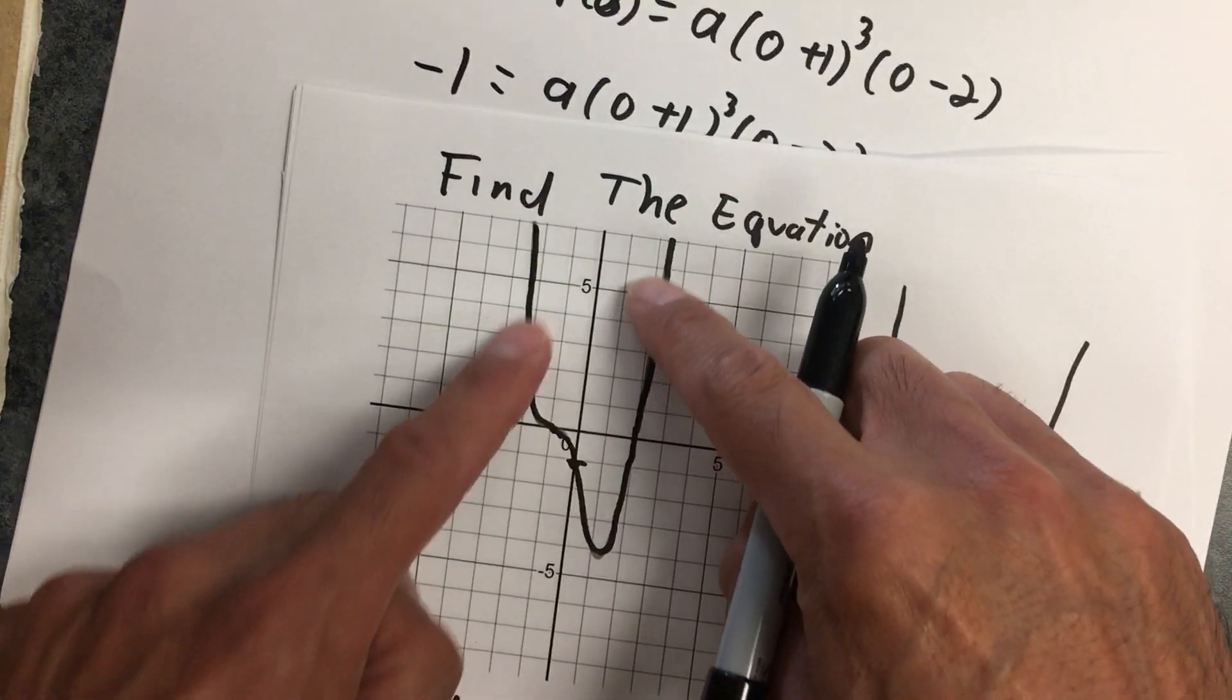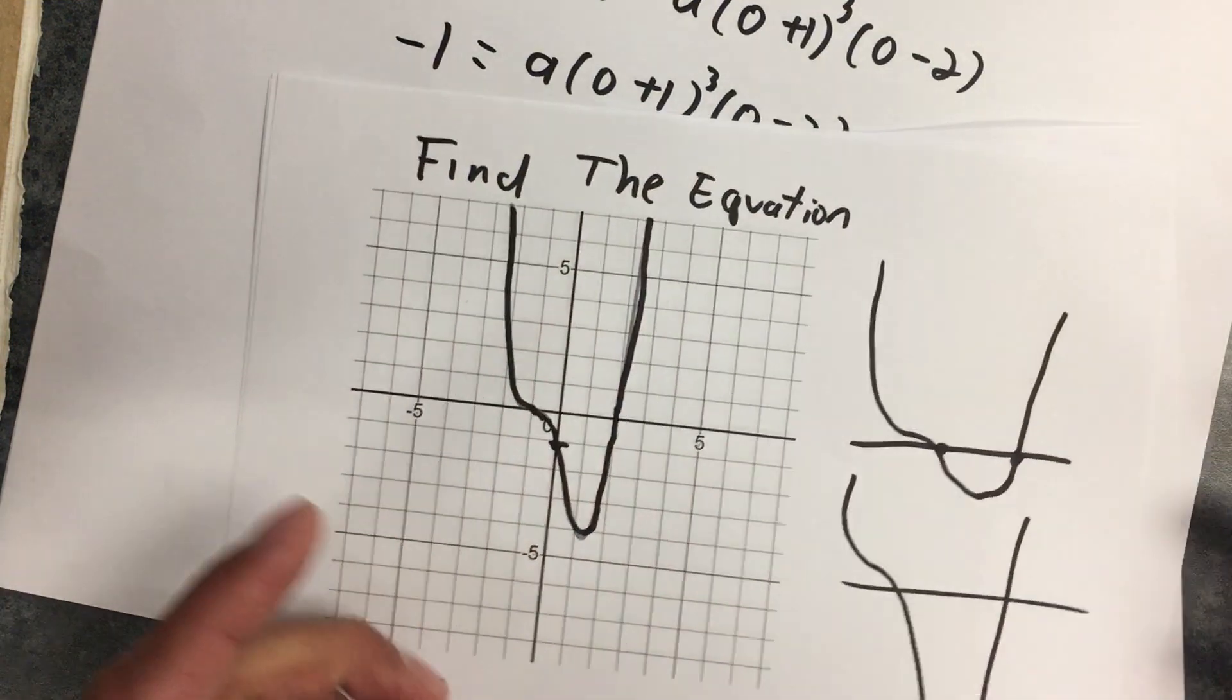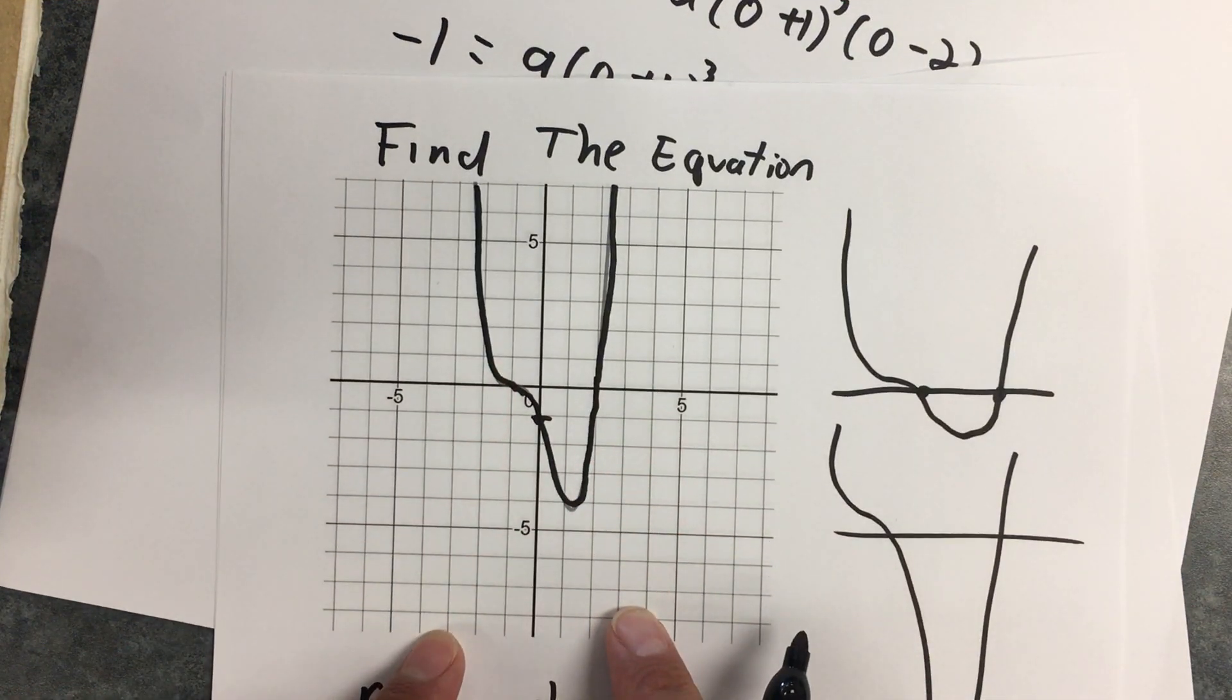And that should make sense. I have a positive leading coefficient and an even order polynomial. I have an even order polynomial because it opens like that. And it's positive. If it was negative, it would be down here.